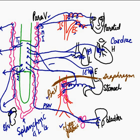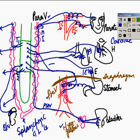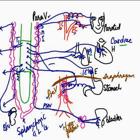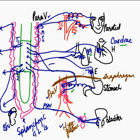The plexuses associated with these organs — cardiac, pulmonary, esophageal, and hypogastric — are actually combinations of sympathetic and parasympathetic fibers. The sympathetic component has been described. The parasympathetic contribution below the neck is provided through the vagus nerve, with cells originating in the brain.